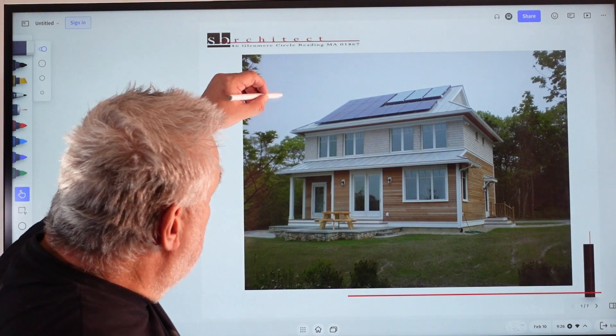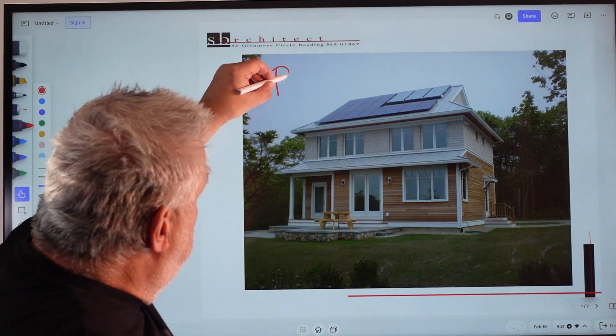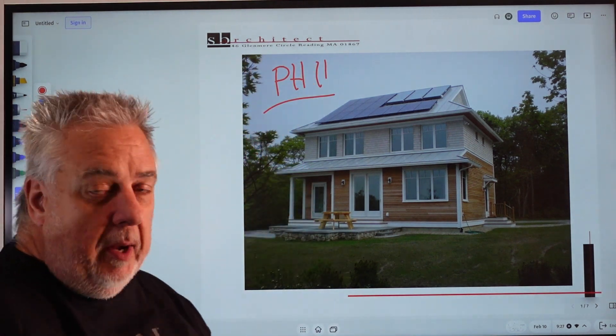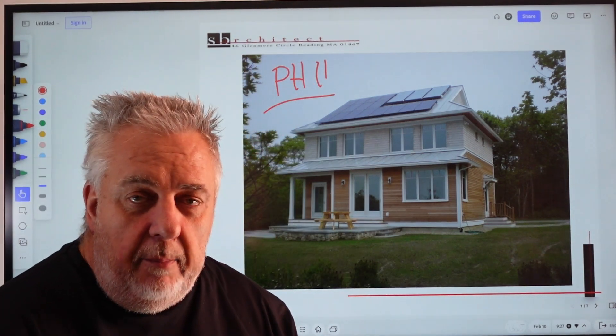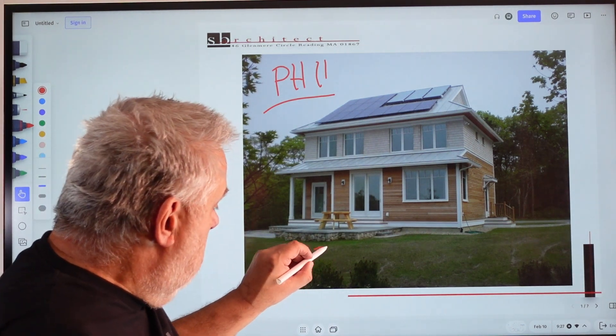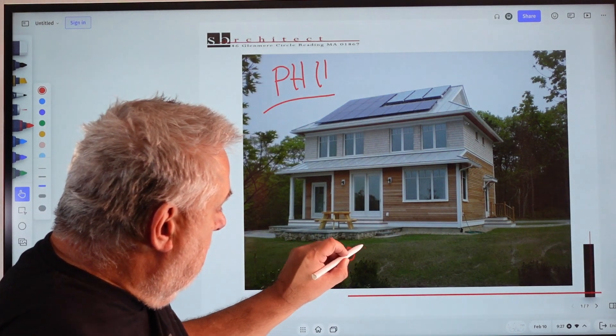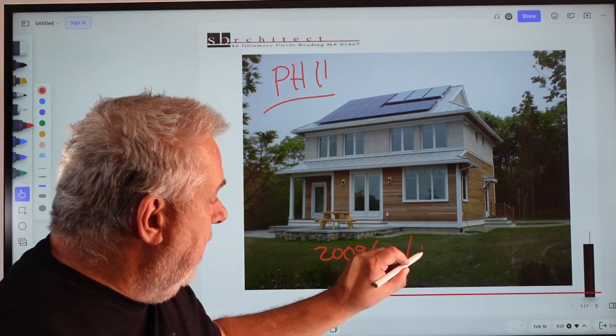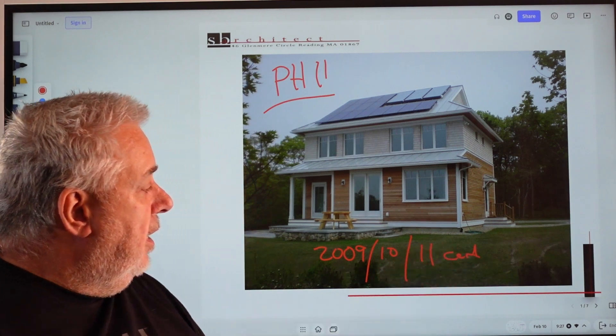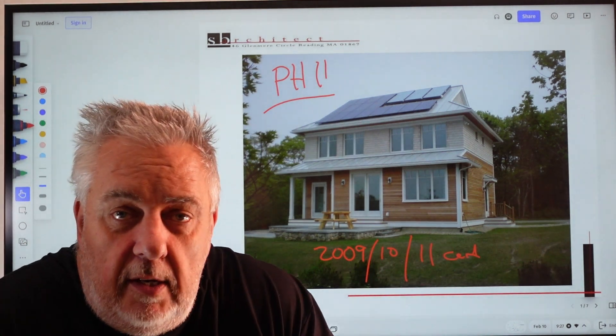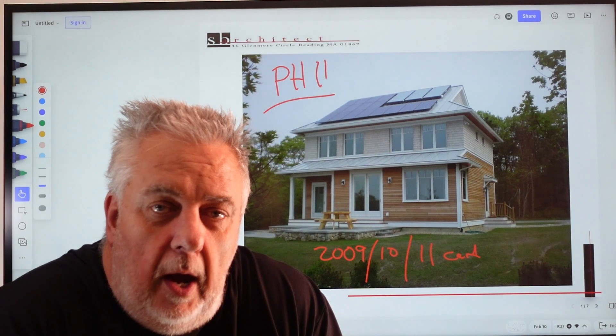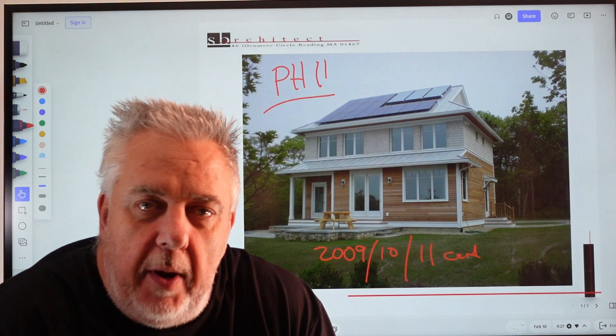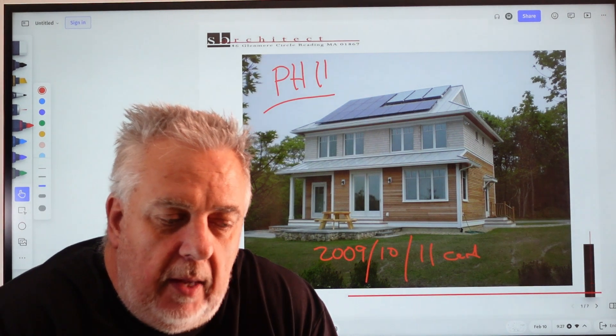This is the Passive House 11 series. Here's a quick picture of that Passive House. If you haven't been following along, I designed it in 2009, we built it in 2010, and it actually got certified in 2011. 13 years ago we completed certification on this house and it became one of the first passive houses in the country.